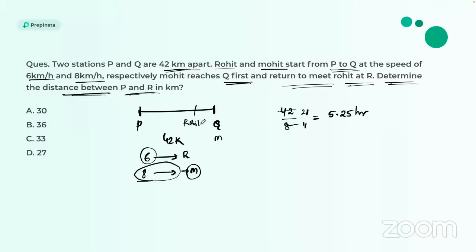At 5.25 hours, Mohit reaches Q and Rohit will be somewhere between P and Q. After 5.25 hours, what distance has Rohit covered? Multiply Rohit's speed by the time taken.